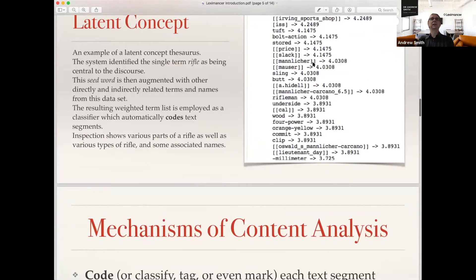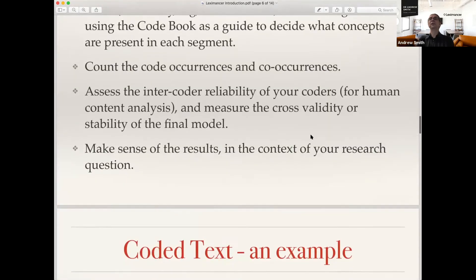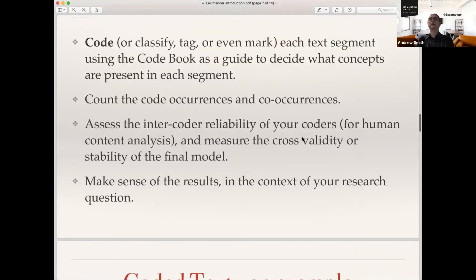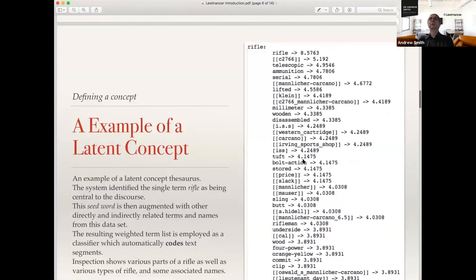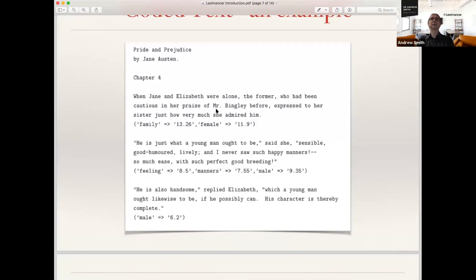After that, content analysis does coding. It uses these concept models to predict whether a piece of text is talking about an idea. This is an example of coding one or two sentence pieces of text with concepts that are found in them.